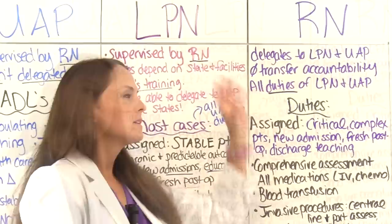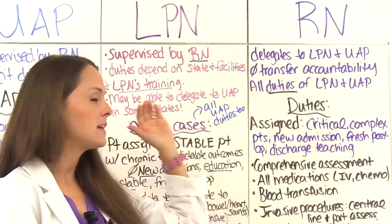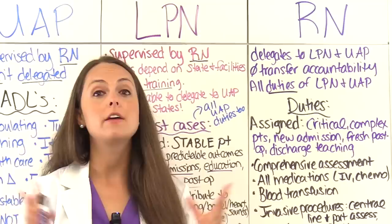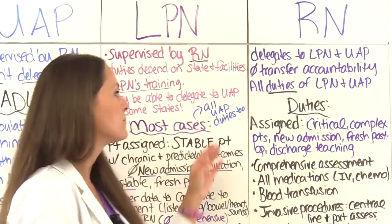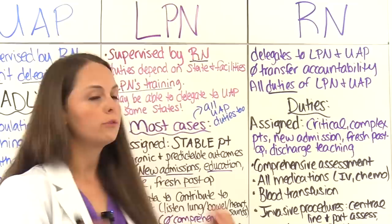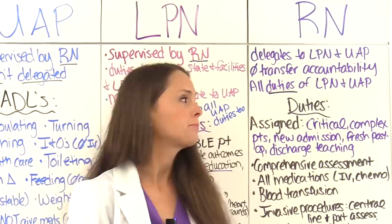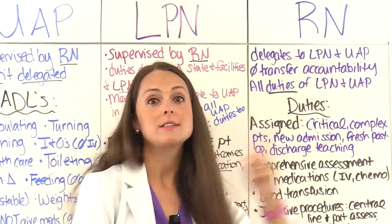To recap, don't delegate to the LPN anything that requires educating the patient, planning patient care — such as doing the care plan, developing nursing diagnoses and interventions — or evaluating the care plan, or anything involving assessment. The RN delegates to the LPN and unlicensed assistive personnel but does not transfer accountability for those tasks. When assigning to an RN, give them the most critical and complex patients, new admissions, fresh post-op patients, and patients who need a lot of discharge teaching.